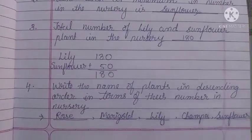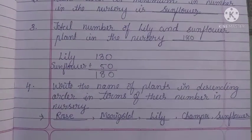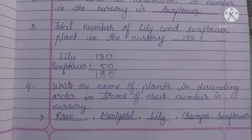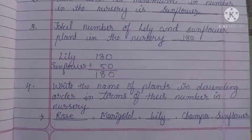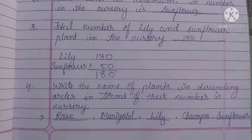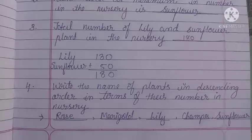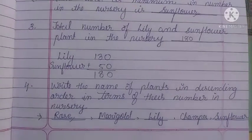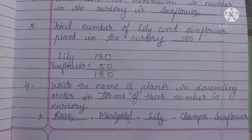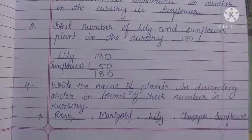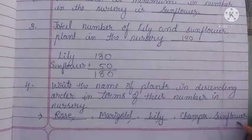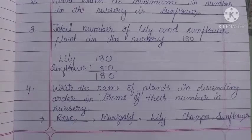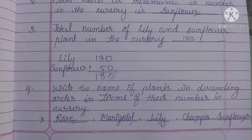Last question: write the names of plants in descending order by their number in the nursery. Rose has 175 — the highest. Then marigold 160, then lily 130, then chumpa 120, and last sunflower 50. This is the descending order. See you guys in the next video — bye bye, take care!